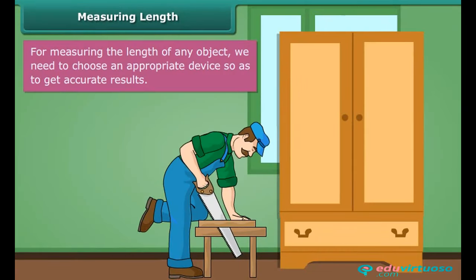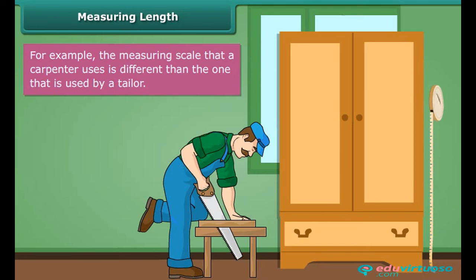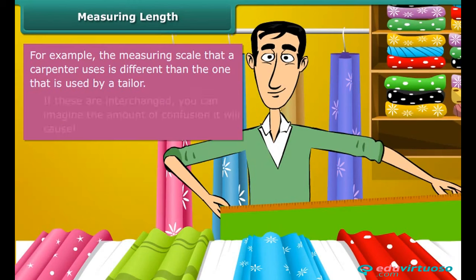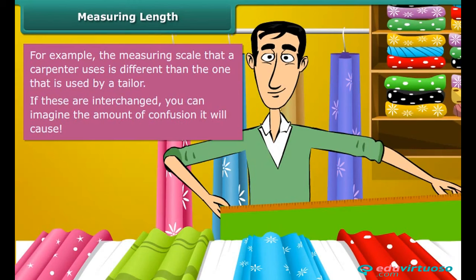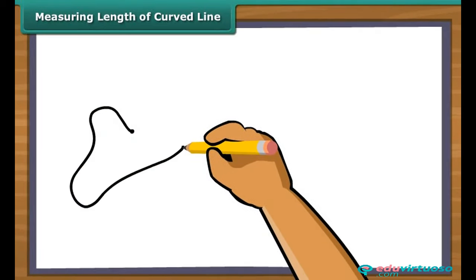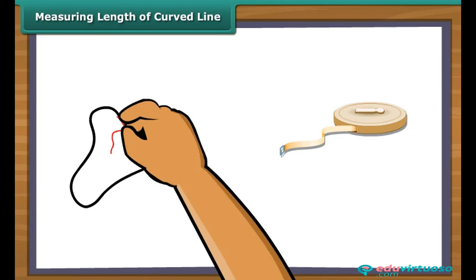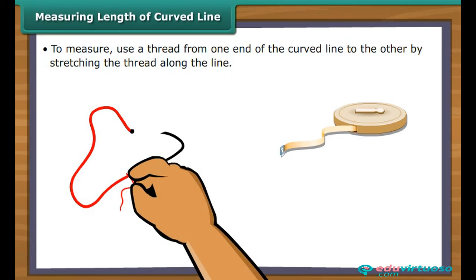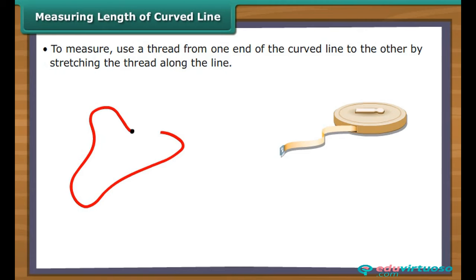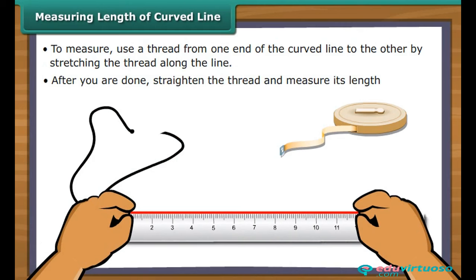For measuring the length of any object, we need to choose an appropriate device so as to get accurate results. For example, the measuring scale that a carpenter uses is different from the one used by a tailor. If these are interchanged, you can imagine the amount of confusion it will cause. To measure a curved line, the standard measuring tape will not be enough. You will have to use a different mechanism. You will use a thread along the line of the curve from one end to the other. After you are done, straighten the thread and measure its length. You will know the length of the curved line accurately.